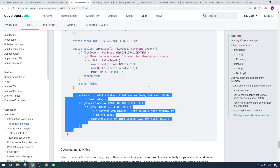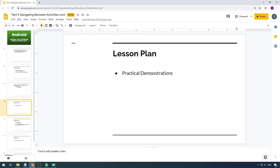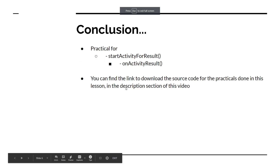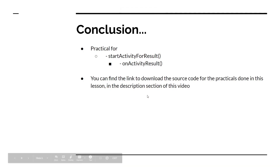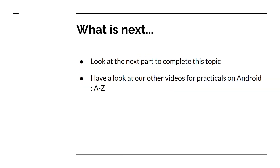That's excellent. Looking at the lesson, we completed the practical demonstration successfully. You learned about how to start an activity and get a result. You can find the link to download the source code in the description, along with reference to sample Android developer docs. Have a look at our next lessons to continue this series — we're very excited to see you in the next lesson.